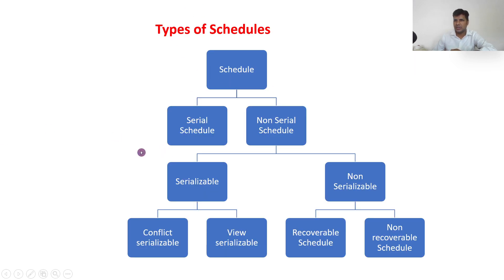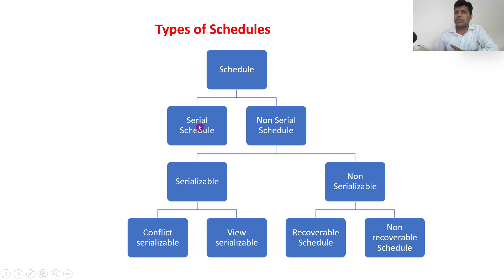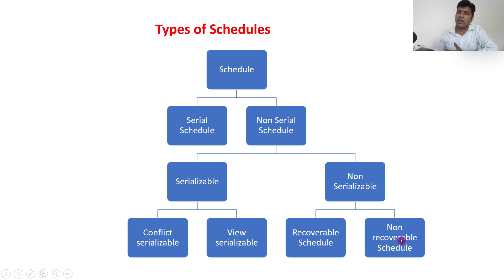To summarize: a schedule is a sequence of operations. If operations are in serial order — one after another — it is called a serial schedule. If parallel or non-serial, it is called a non-serial schedule. If a non-serial schedule can be converted into a serial schedule, it is serializable — with conflict serializable and view serializable types. If it cannot be converted, it is non-serializable, which is further divided into recoverable and non-recoverable.